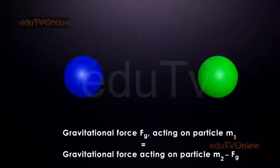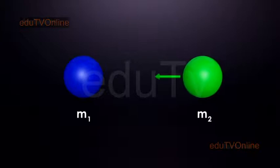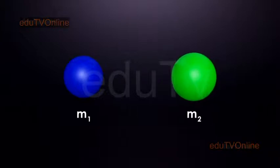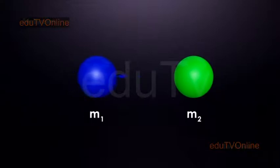The force of gravity is a vector quantity. Object M1 will attract object M2 with a force directed towards M1. Object M2 attracts object M1 with a force directed towards M2.